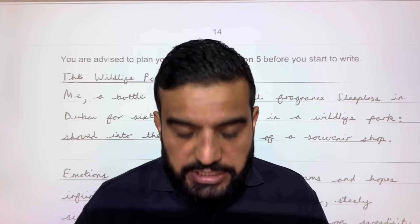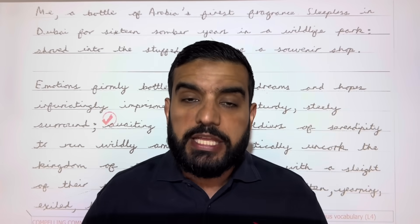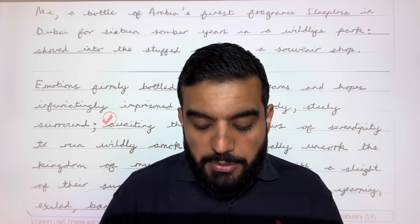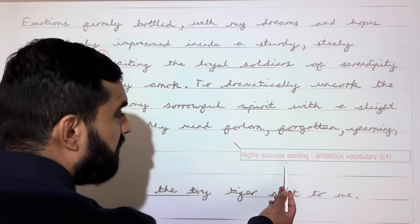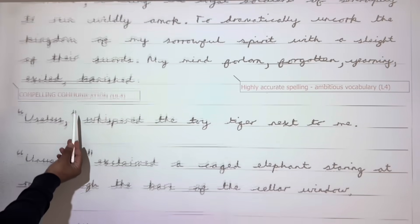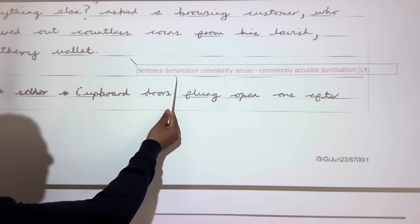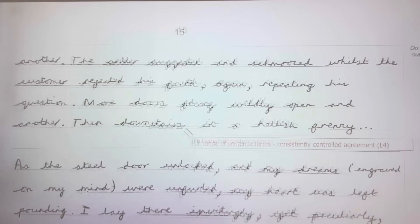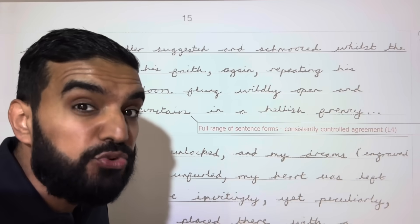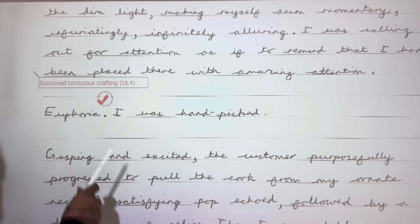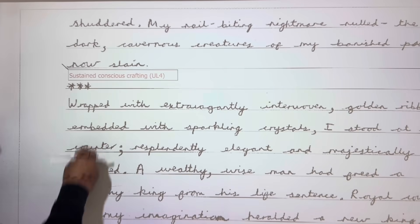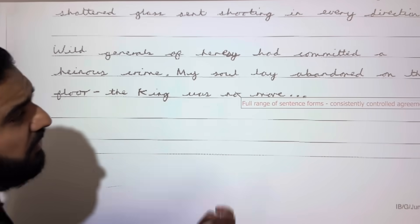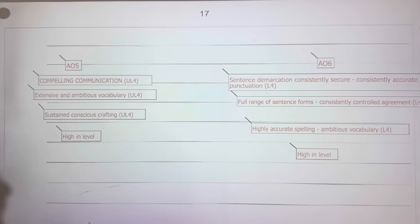This student did pre-plan her Question 5, but look at what the exam board is actually marking her on. They marked her on her spelling, her vocabulary, her full stops and commas, her punctuation, her sentence forms, her language devices. Let me zoom in — they marked her on spelling, vocabulary, punctuation, sentence forms, and language devices.